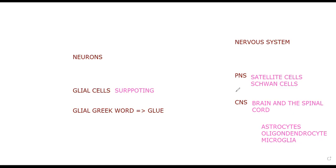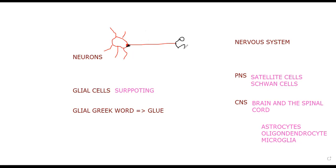Schwann cells are very important. Looking at a neuron: it has dendrites on one side which receive information; it has the axon hillock; then the axon itself; and finally the terminal bouton or nerve endings at the other end. The nucleus makes proteins that are transported down to the terminal boutons for storage.